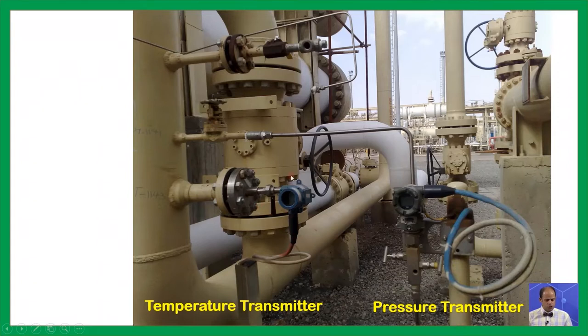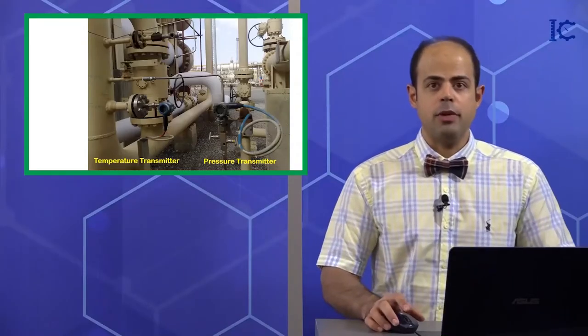So this temperature transmitter which was installed on the thermowell has the responsibility for measuring the temperature and finally send it to the control room via a signal 4 to 20 mA. Moreover, this pressure transmitter was installed on the manifold and actually was fastened with the help of a U-bolt and bracket on this unit. This one has the responsibility to measure the pressure and finally send it to the control room again via electrical signal, I mean 4 to 20 mA.